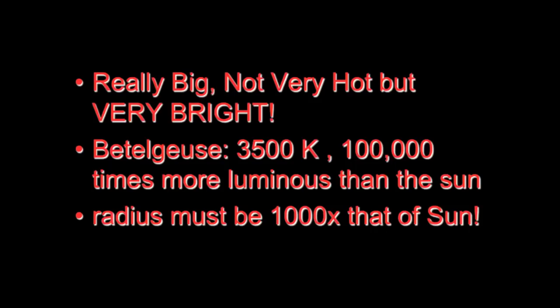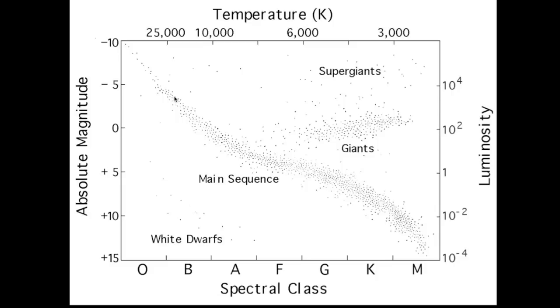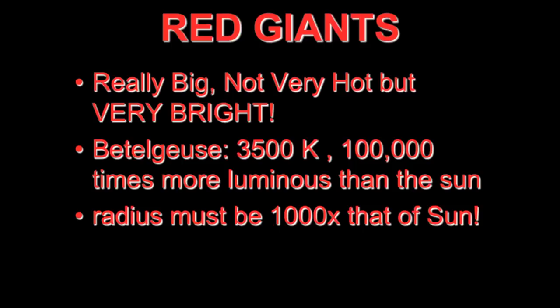First, let's talk about red giants. These are stars that are extremely big. They're not very hot in surface temperature, but they're very bright. So, consider Betelgeuse. 3,500 Kelvin, but it's 100,000 times more luminous than the Sun. What this means is that the radius must be about 1,000 times the Sun's.